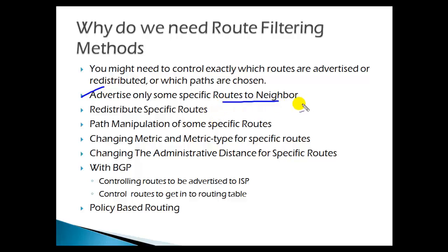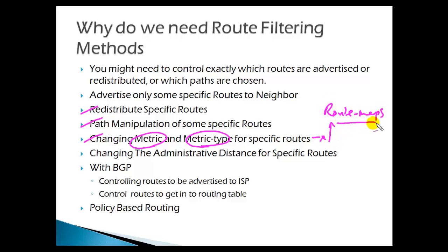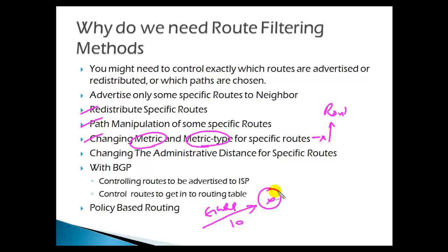Sometimes we may want only specific routes to get redistributed or advertised to a specific neighbor. By default, router one advertises everything to router two, but using route filtering methods we can advertise only specific routes. Additionally, you may want to change the metric or administrative distance for specific routes. For example, routes coming from EIGRP have a default administrative distance of 90, but you can change the administrative distance for specific routes to a different value like 100.